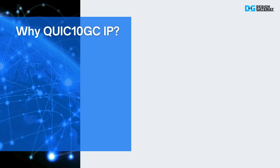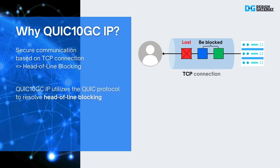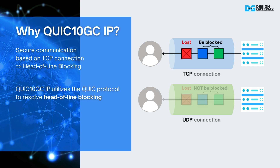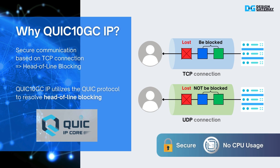Why choose QUIC 10G CIP? In unreliable networks, secure communication based on TCP connections suffers from head-of-line blocking, resulting in low data transfer throughput. QUIC 10G CIP leverages the QUIC protocol to overcome head-of-line blocking by using a UDP-based transport layer, while efficiently managing security and flow control. It ensures network security, maintains high throughput, is compatible with 10G Ethernet, and operates without the need for a CPU.